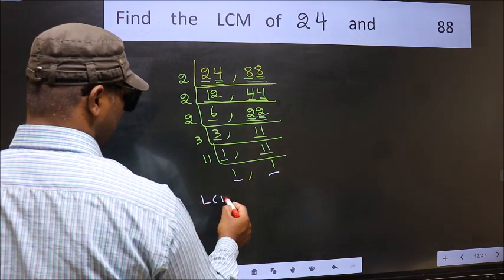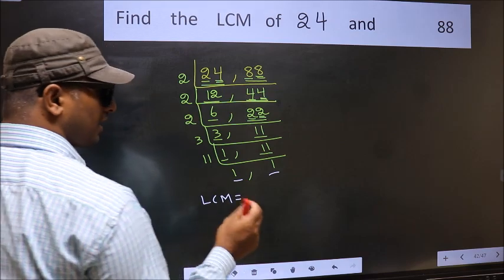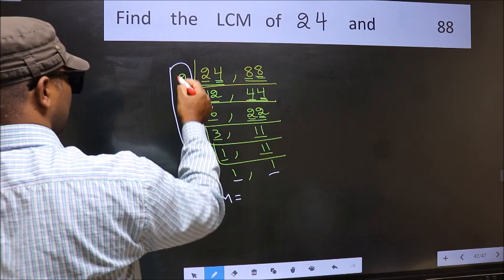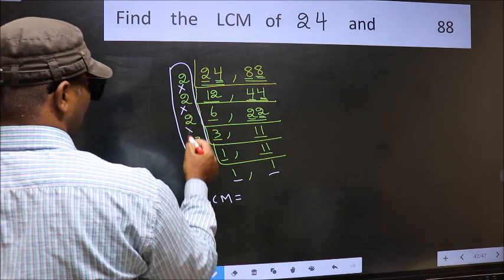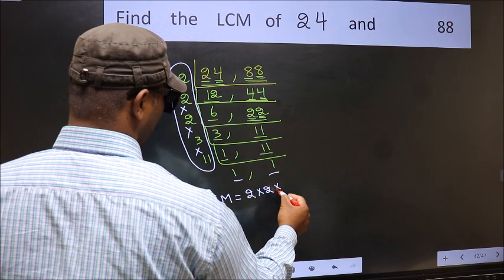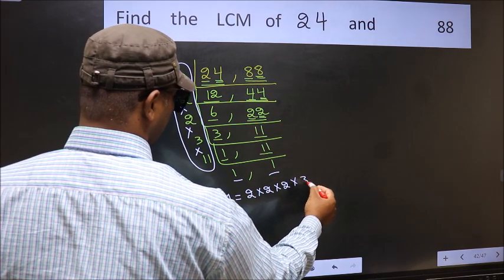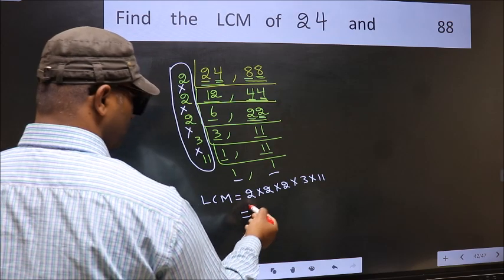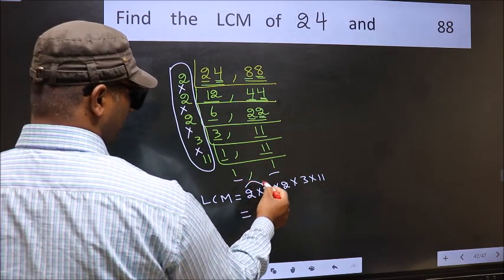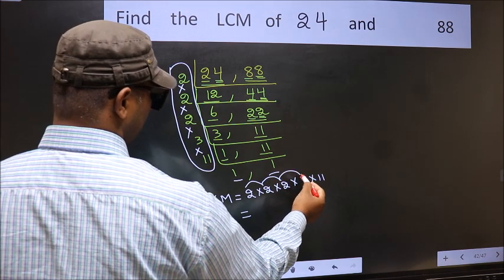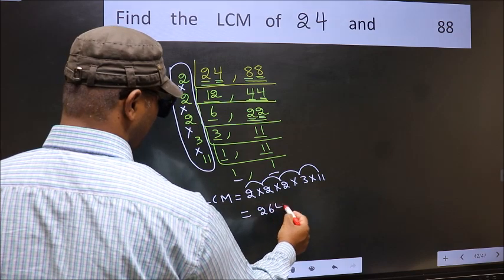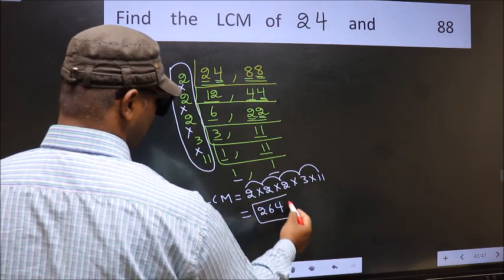So our LCM is the product of these numbers. That is 2 into 2 into 2 into 3 into 11. So let us multiply these numbers: 2 into 2 is 4, into 2 is 8, into 3 is 24, into 11 is 264. So 264 is our LCM.